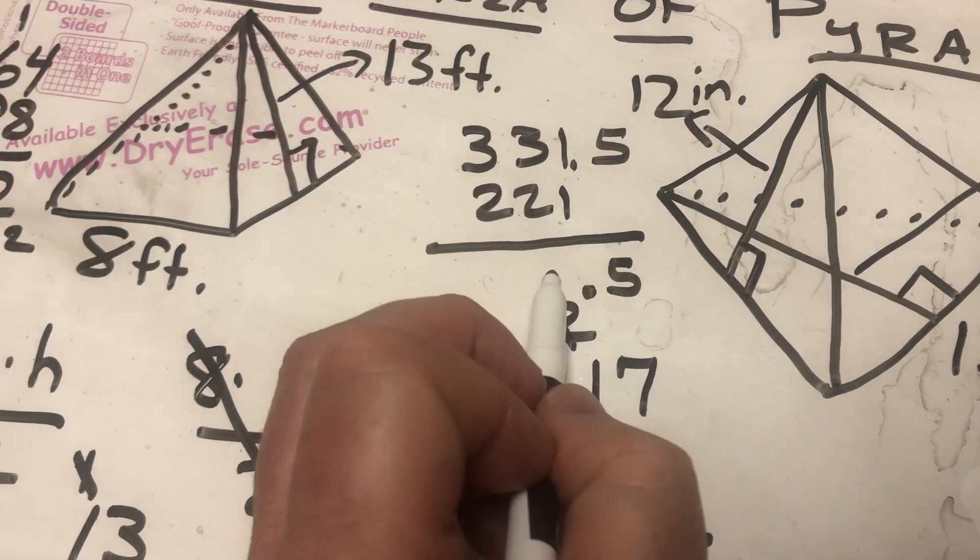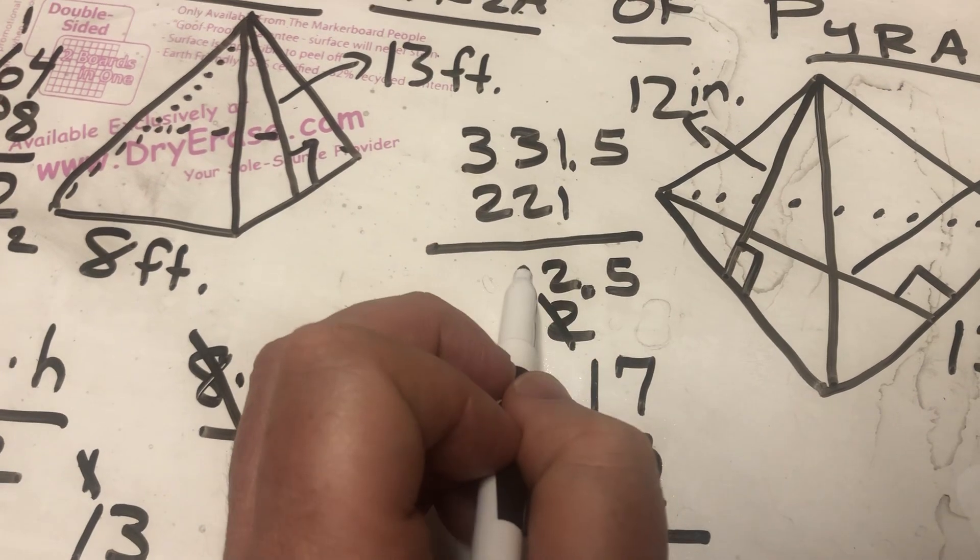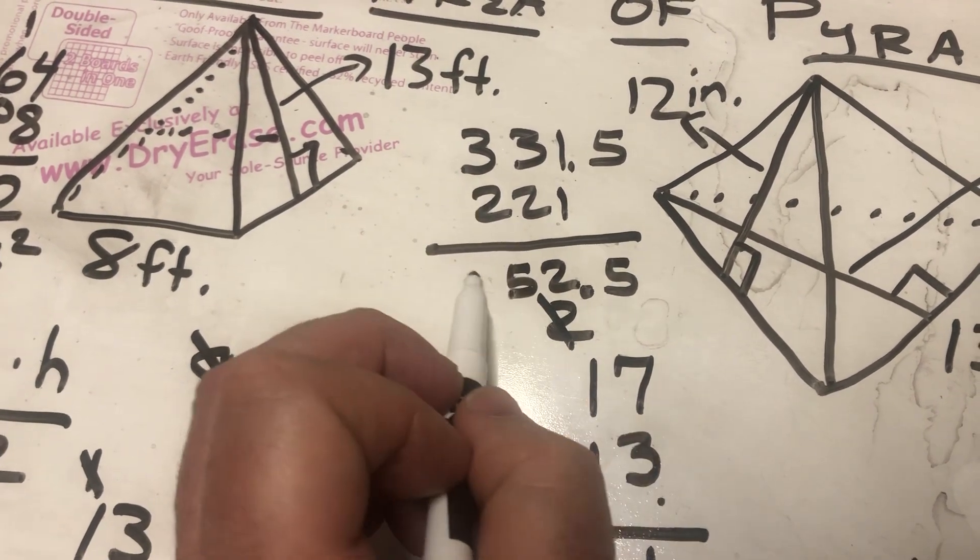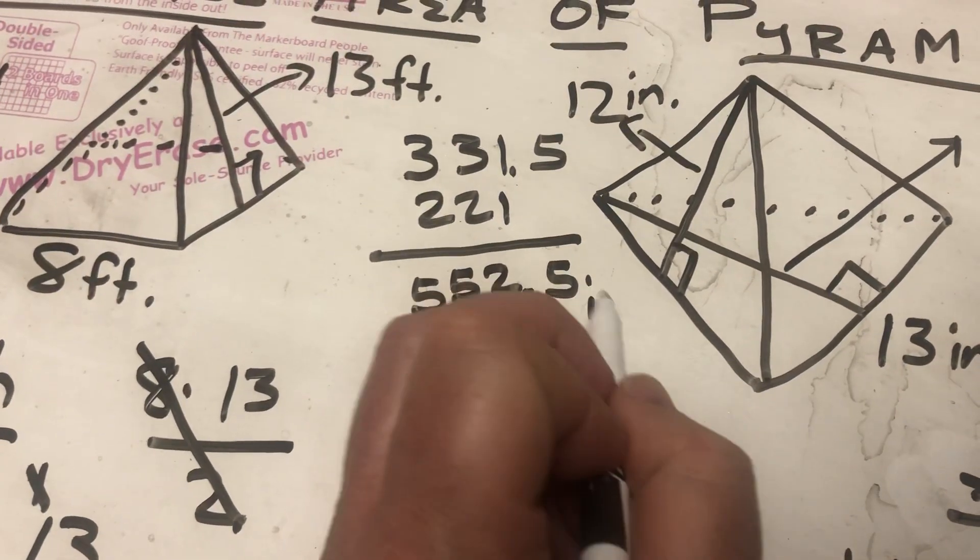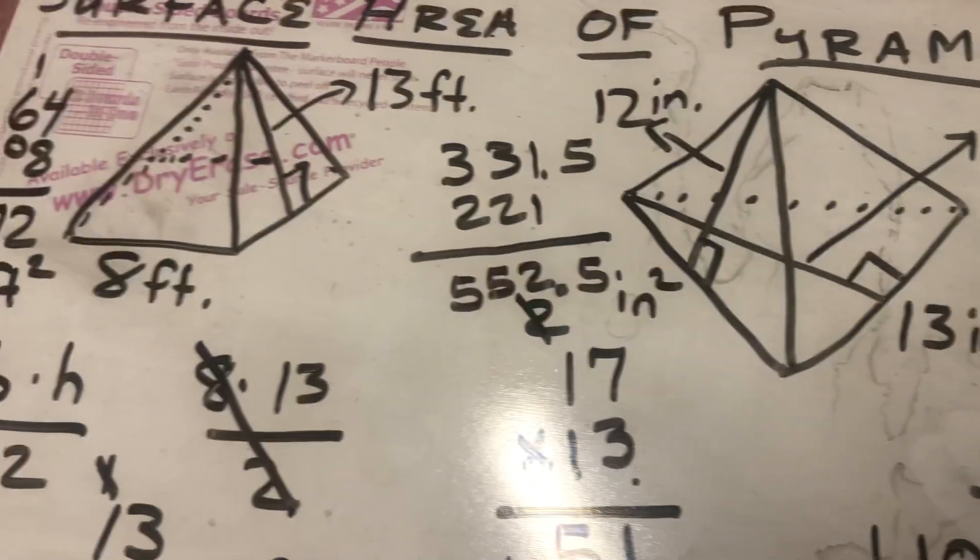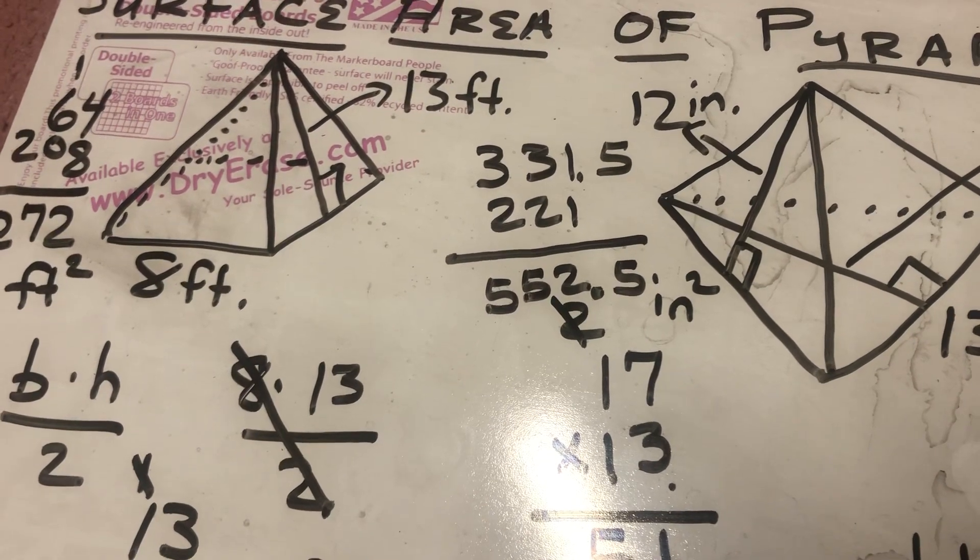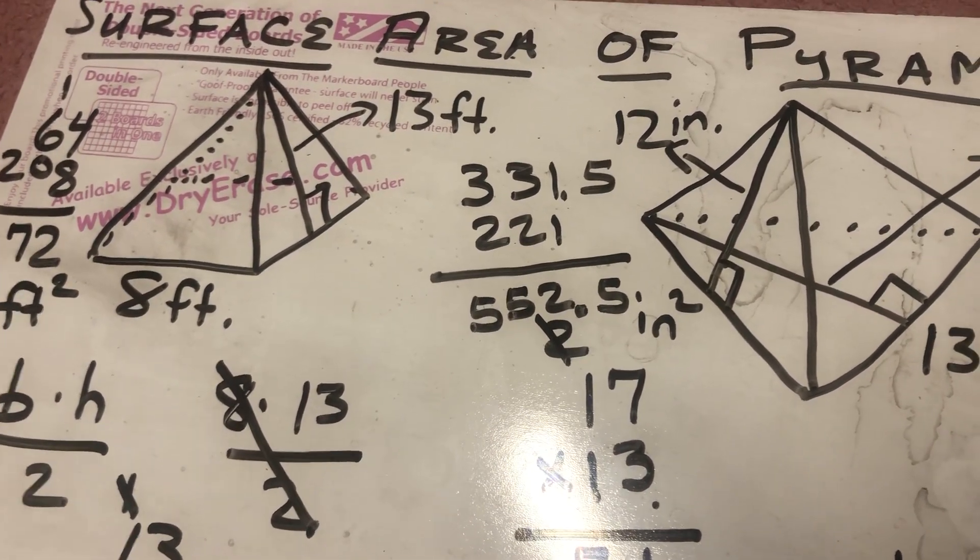1 plus 1 is 2. 3 plus 2 is 5. 3 plus 2 is 5. 552 and 5 tenths square inches. And that would be the surface area of that triangular pyramid.